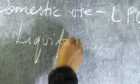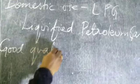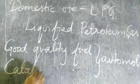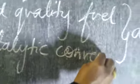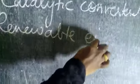For domestic use, that is at home for cooking, you should use LPG gas. LPG stands for Liquefied Petroleum Gas. Good quality fuel should be used in automobiles, and apart from that, catalytic converters should also be used in automobiles.